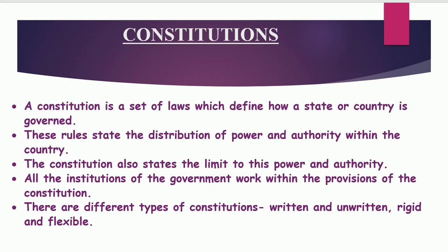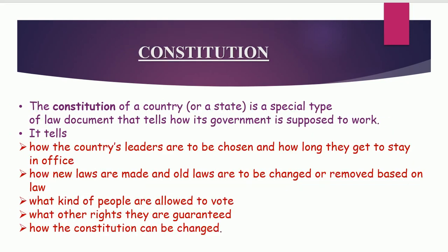There are different types of constitutions - written and unwritten, rigid and flexible. We will be dealing with these types of constitutions in our next video. Today, we will be covering only constitution. Moving on to the next slide: the constitution of a country is a special type of law. As we have already discussed, a constitution is a set of laws, and that type of law document - it is already known that it is a document because it is a set of laws, it must be a document. It is a law document that tells how its government is supposed to work.